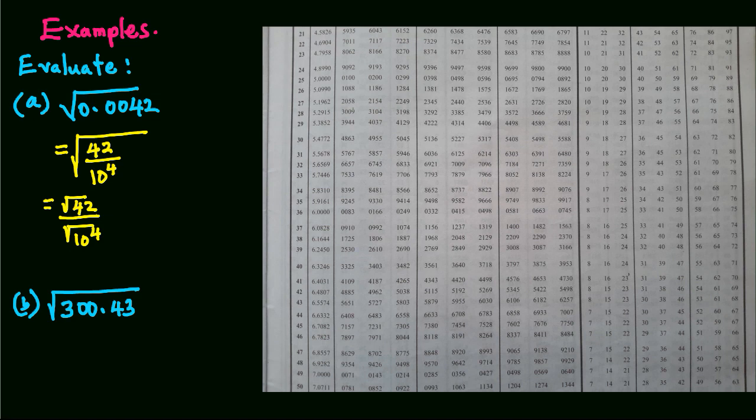In this case, we read the square root from tables, that is square root of 42, and we get the square root by halving the power.